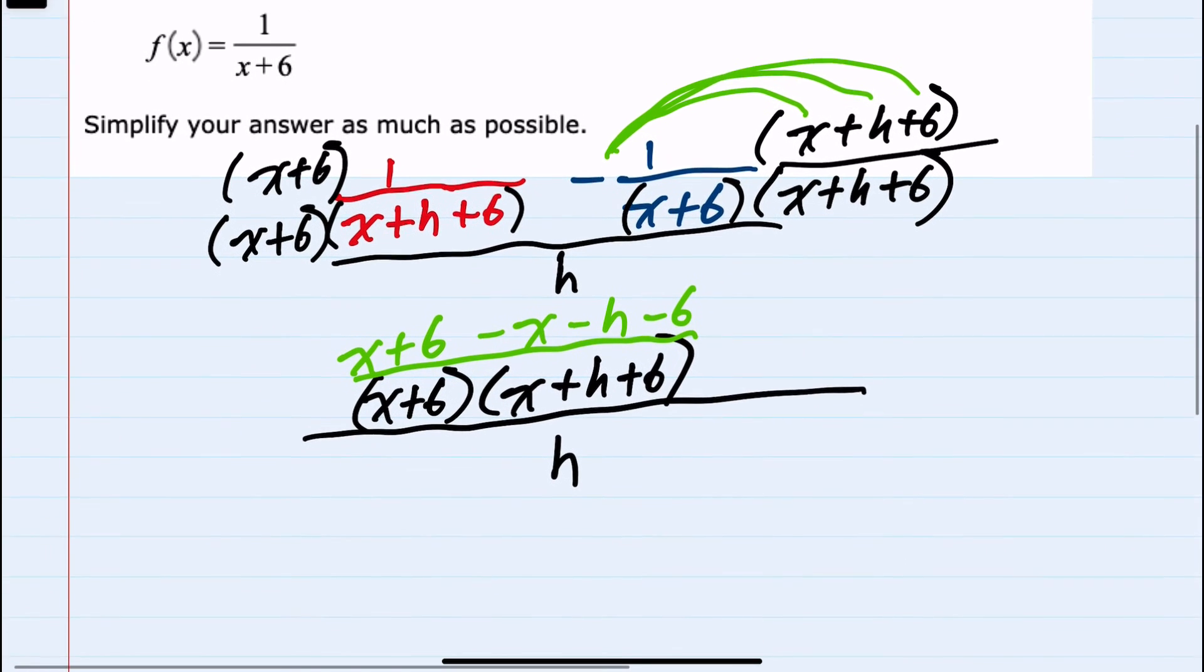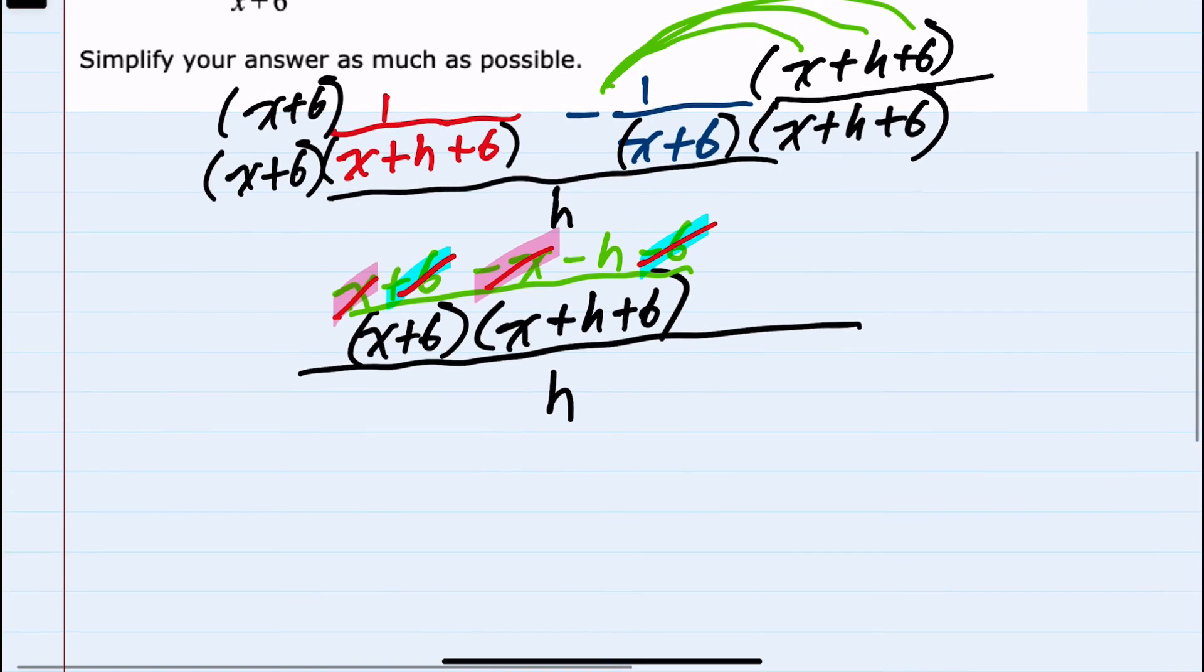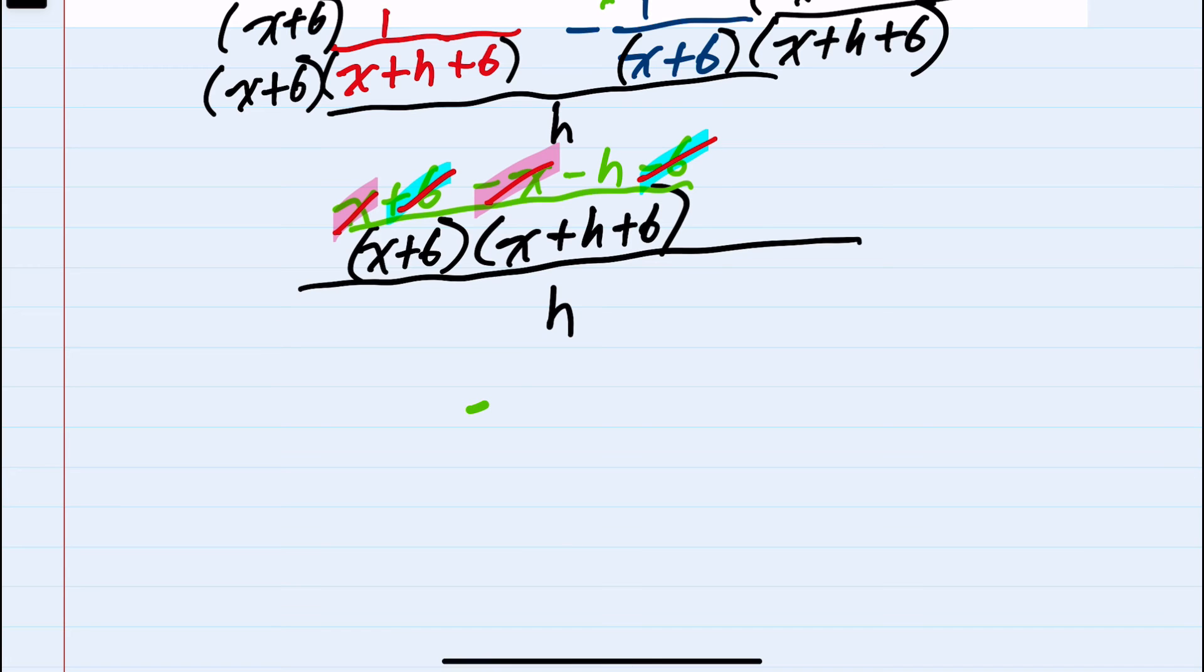Now that we have a common denominator in the top, I can simplify by combining like terms. The x and the negative x will cancel, and the 6 and the minus 6 will cancel, so I would be left with only the minus h in the numerator, with my denominator of x plus 6 times x plus h plus 6.